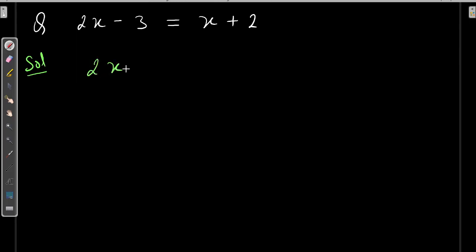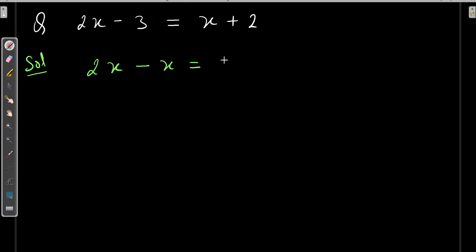So I keep 2x as it is and transpose this x to the left-hand side. When I transpose x to the left-hand side, it becomes minus. And when I transpose this 3 to the right-hand side, it becomes plus. So x is on the left-hand side and the constant number is on the right-hand side.